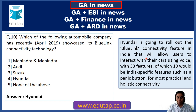Question 12: Karthik Rath has recently passed away. He was related to which of the following fields? Personalities in news, especially obituaries, are important. The answer is option 2, drama. Eminent theatre organizer and playwright Karthik Chandra Rath has passed away. He was a recipient of awards like Odisha Sangeet Natak Academy and Kendra Sangeet Natak Academy. He was associated with theatres and dramas.